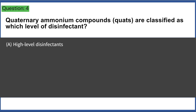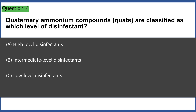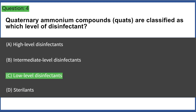Quaternary ammonium compounds (QUATs) are classified as which level of disinfectant? a) high-level disinfectants, b) intermediate-level disinfectants, c) low-level disinfectants, d) sterilants. Answer: C, low-level disinfectants.